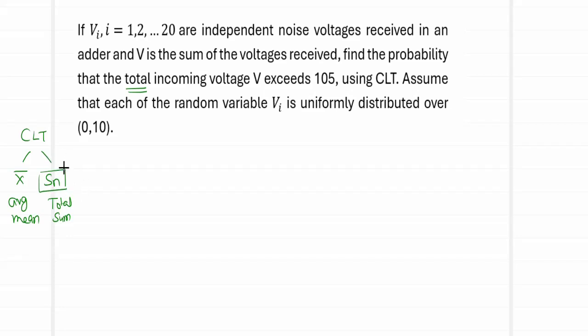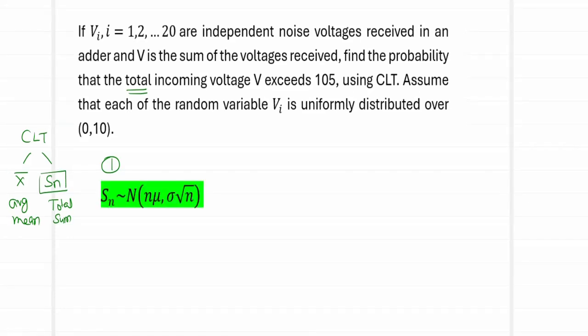Now we will see what kind of problem this is posing. Find the probability that the total incoming voltage V exceeds 105. Total, which means it is going to be a problem on Sn. We have now fixed that the problem deals with Sn. Step number one is to write the formula for Sn.